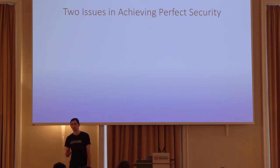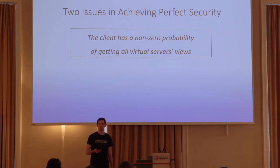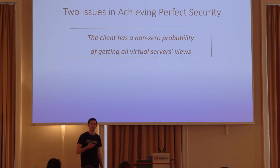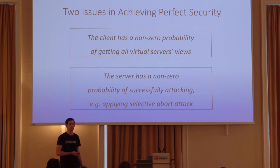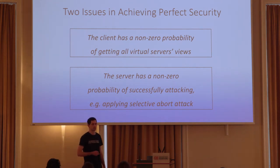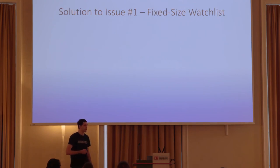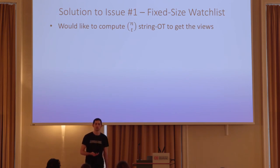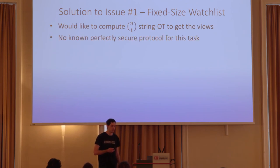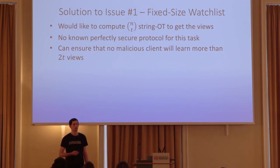What are the two issues that prevent perfect security? The first is with respect to the client: each virtual view is given with some constant probability, meaning there is a non-zero probability the client receives all virtual server views and therefore learns the server's input. The second issue is that the server can still attack with non-zero probability — for example, by guessing the client's random bits and applying the selective abort attack. To address the first issue, we want a fixed-size watch list of exactly T views, which amounts to computing T-out-of-N string OT. However, we don't know if that can be done with perfect security — it's still an open question. What we can do is ensure that no malicious client learns more than 2T of the views.